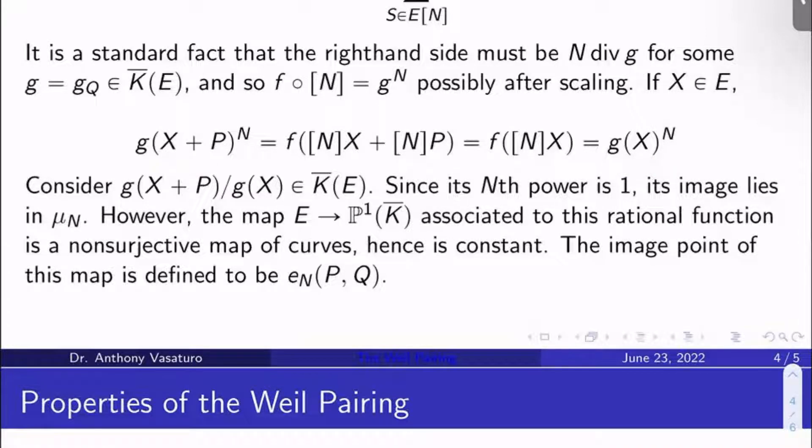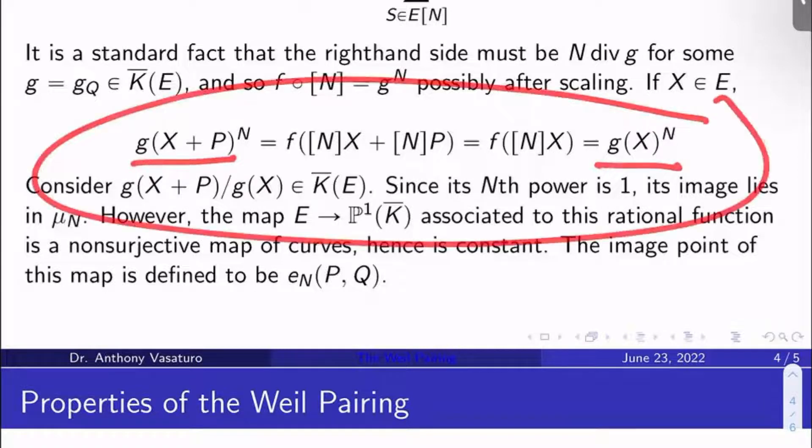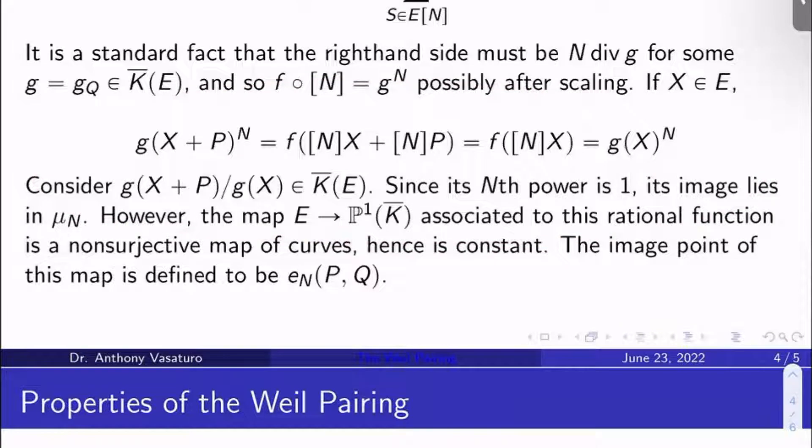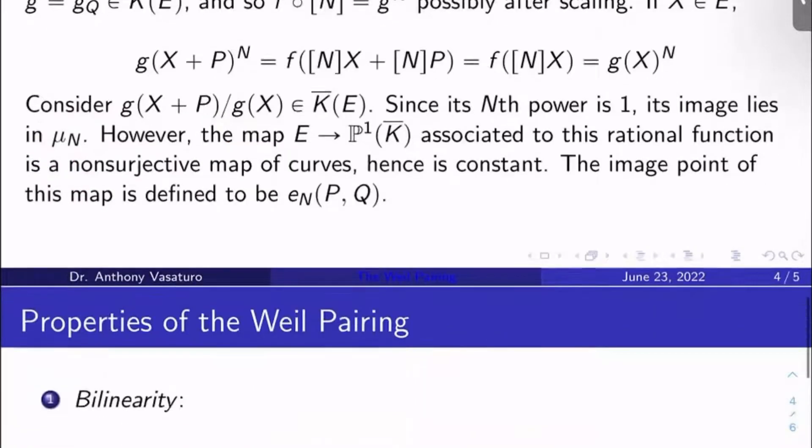So let's take g(X + P) to the N, and let's divide it by, I'm sorry, let's take g(X + P). Let's divide it by g(X). Of course, that's a K̄ rational function on E. Now, I know its nth power is one, right? Because g(X + P) to the N divided by g(X) to the N from this equation is just one. Well, that's just the same thing as saying g(X + P) over g(X), all to the nth power is one. In other words, the nth power of this function is one, right? So that means the image of this function lies in the nth roots of unity, right? By definition.